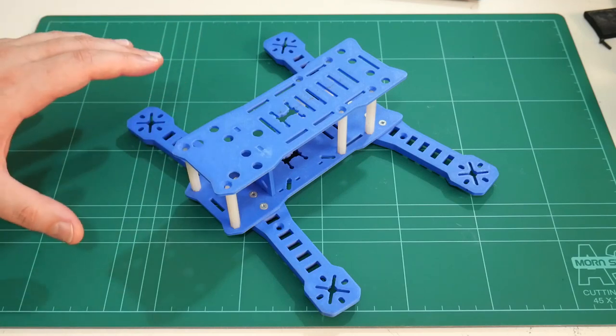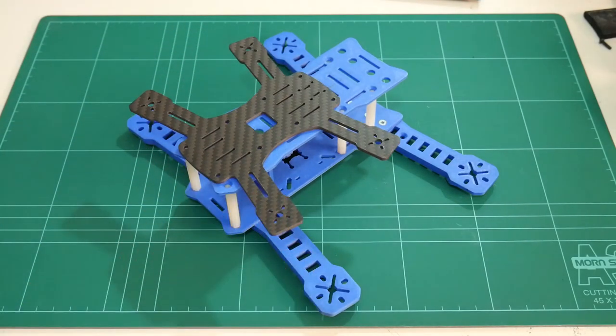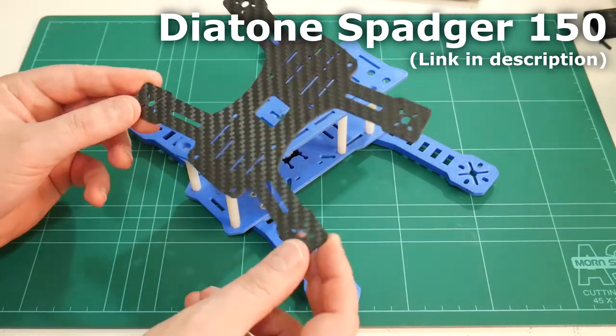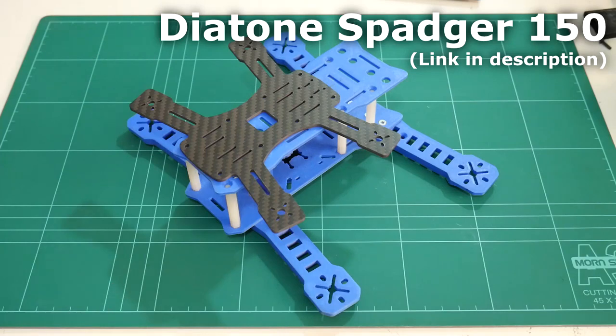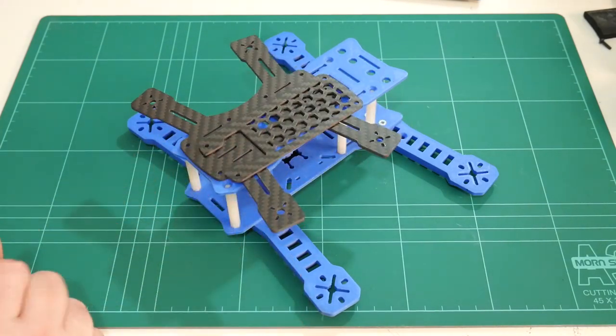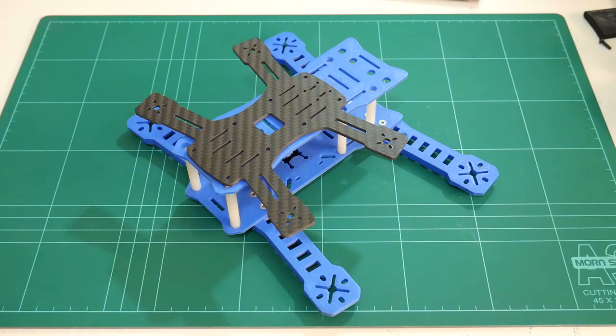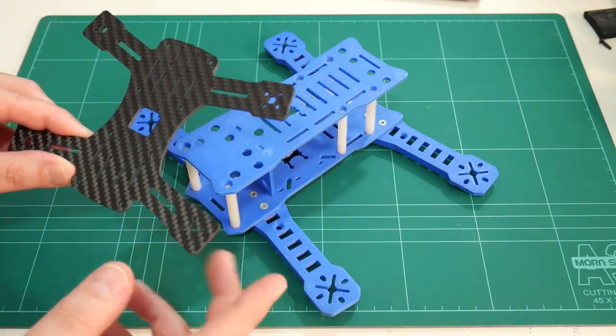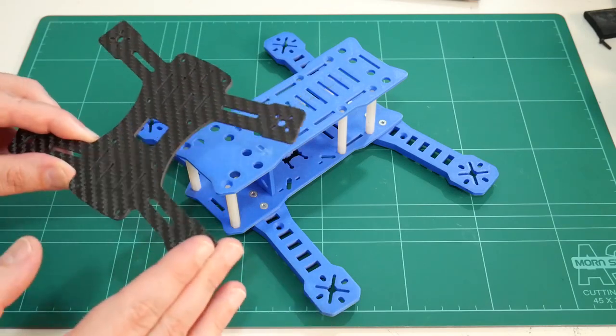Rather than print out another frame, at least initially, I've gone out and bought a carbon fiber frame. This is the Spadger 150 size frame made of 2.5 millimeter carbon fiber on the base and 1.5 millimeter carbon fiber on the top.